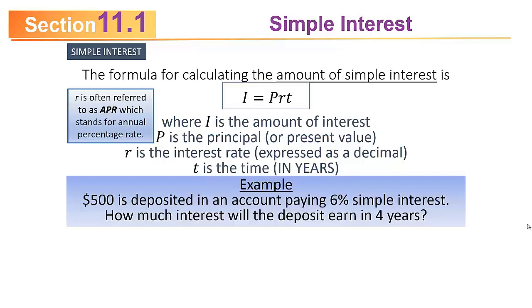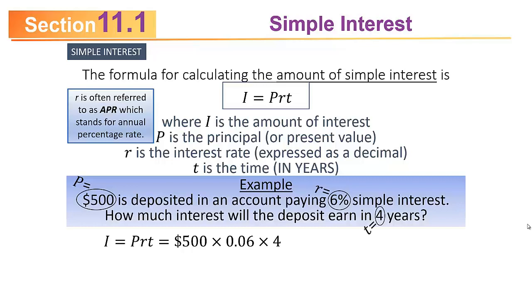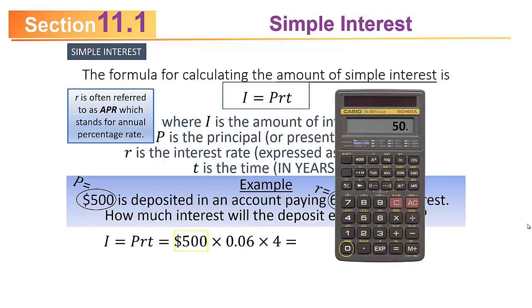For example, $500 is deposited in an account paying 6% simple interest. How much interest will the deposit earn in four years? You simply plug into the formula. The principal is $500, the interest rate is 6% written as a decimal, 0.06, and you're doing it for four years, so t = 4. Multiplying those three numbers together, 500 × 0.06 × 4, you get $120 in interest.